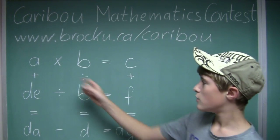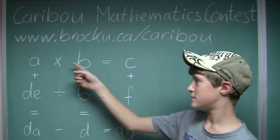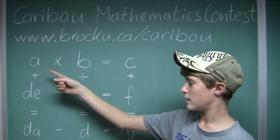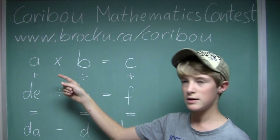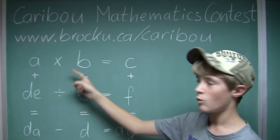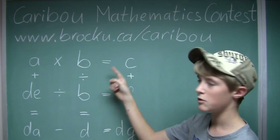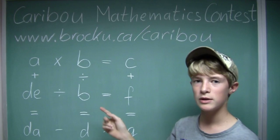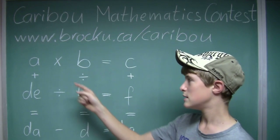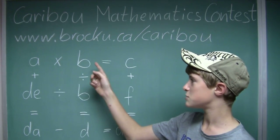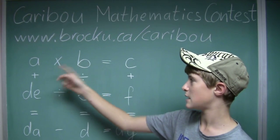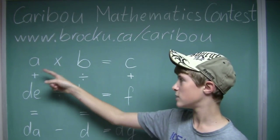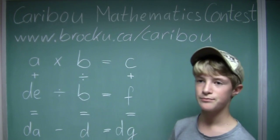So we would start off with the top. What is special about it is that a 1-digit number times a 1-digit number equals a 1-digit number. So there are only two cases: 2 times 3, or 3 times 2, and 4 times 2, or 2 times 4.